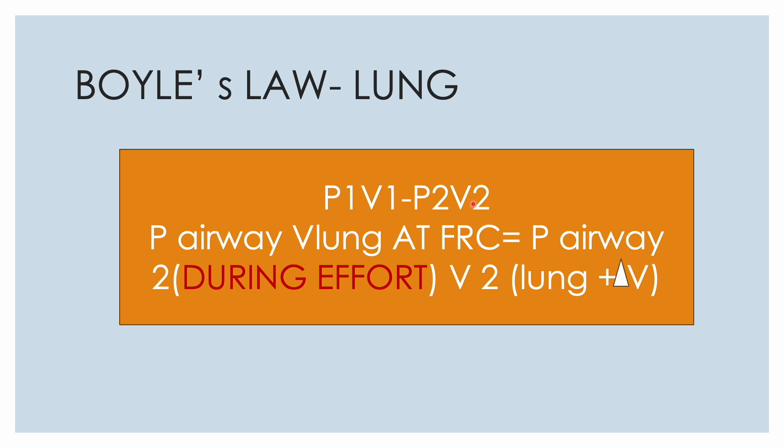...at FRC should be equal to the airway pressure during the effort which is P2 and the lung volume which is V2, which is the original lung volume plus a delta V. So now you know these variables - you know the airway pressure, you multiply them. So if you divide this, you will get a V2 which is the lung volume plus delta V.